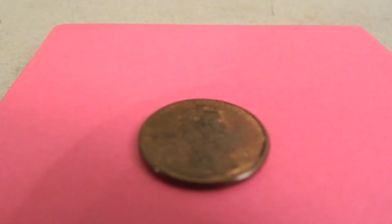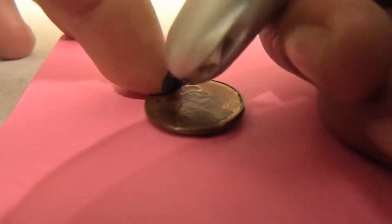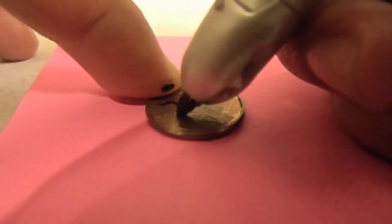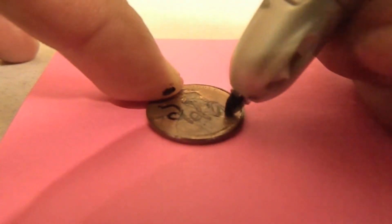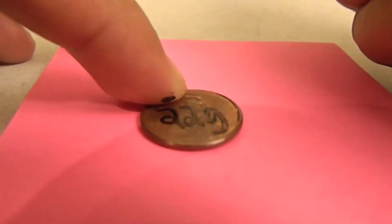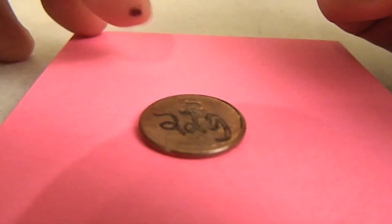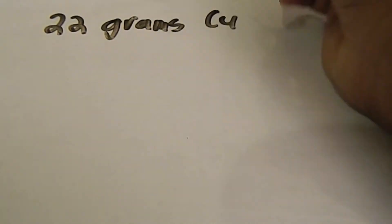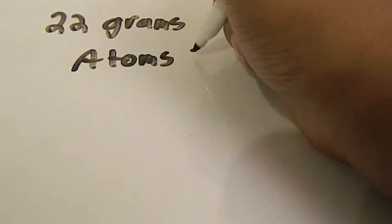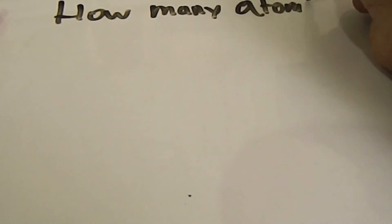All right, let's just say that there's 22 grams of copper, and that we're trying to figure out how many atoms are in 22 grams of copper. Now we have 22 grams of copper on screen.